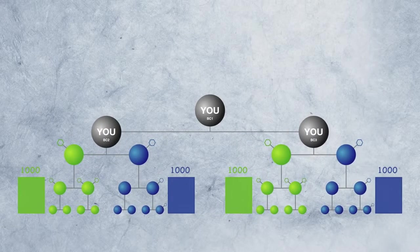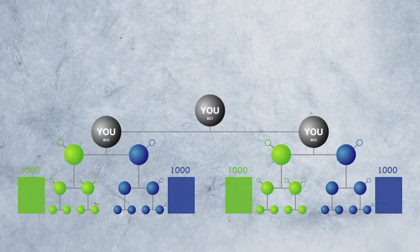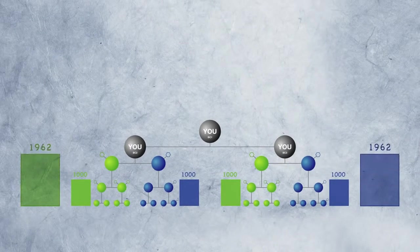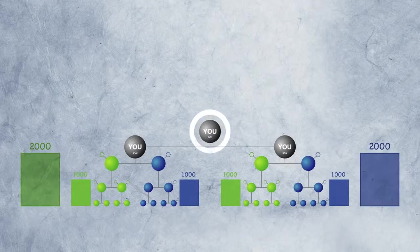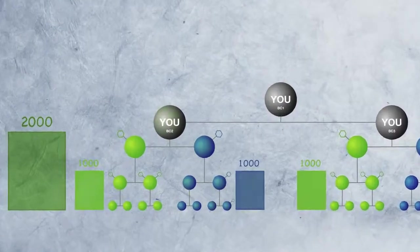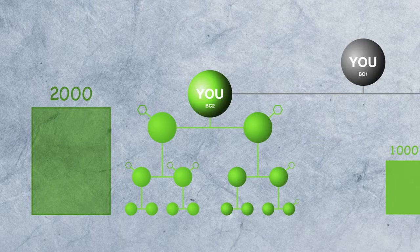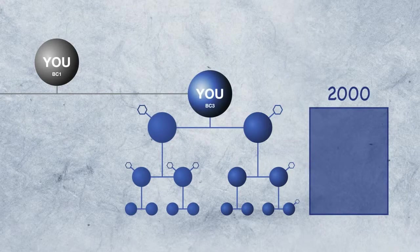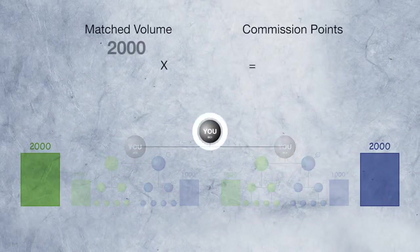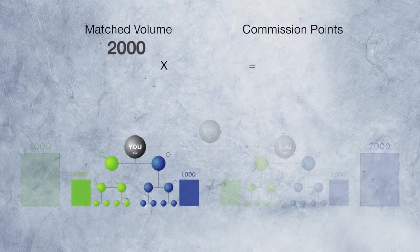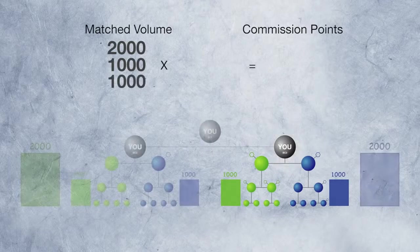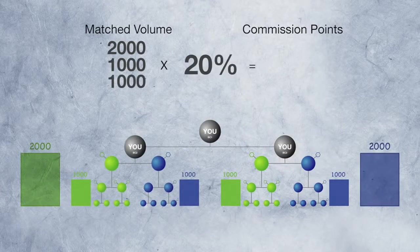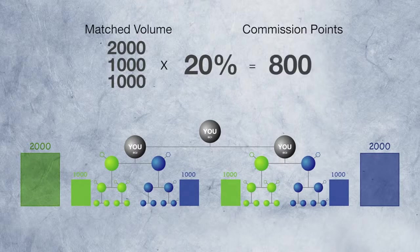For this example, we'll use nice even numbers to keep the math easy. So let's say both sides of BC2 and BC3 each generate 1,000 sales volume points. You'd also have 2,000 left and 2,000 right on your BC1. Why? Because everything under BC2 is on the left side of BC1, and everything under BC3 is on the right of BC1. To calculate your weekly commission, you've got 2,000 sales volume points from BC1, 1,000 from BC2, and 1,000 from BC3. 20% of the total is your commission. In this example, it's 800 commission points.